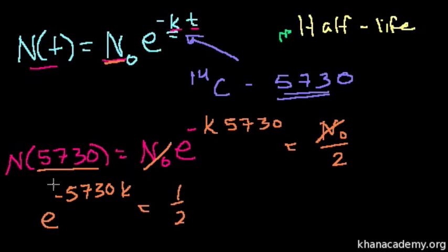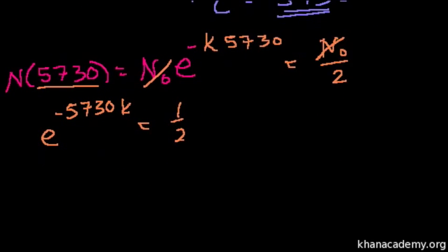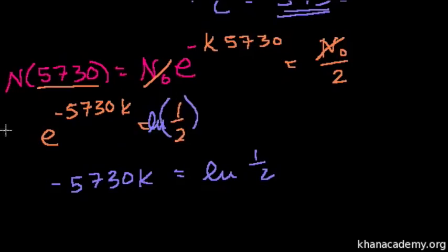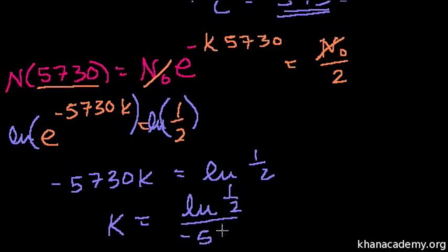If we take the natural log of both sides, what do we get? We get natural log of e to anything. The natural log of e to the a is just a. So the natural log of this is minus 5,730k is equal to the natural log of 1 half. I just took the natural log of both sides. And so to solve for k, we could just say k is equal to the natural log of 1 half over minus 5,730. So it equals 1.2 times 10 to the minus 4.